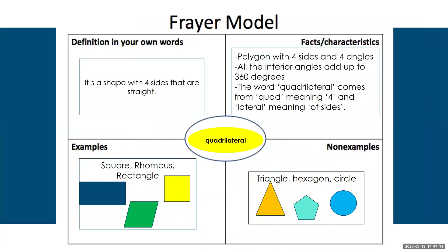Here's an example of a completed Frayer Model. When we sit down with a student, we wouldn't give them a completed Frayer Model — talking through it is very important. Here's an example with the term quadrilateral. We would start with the term in the middle of the Frayer Model and ask the student, 'Tell me, what is a quadrilateral? Tell me in your own words.' The student might say something like, 'It's a shape with four sides that are straight.'